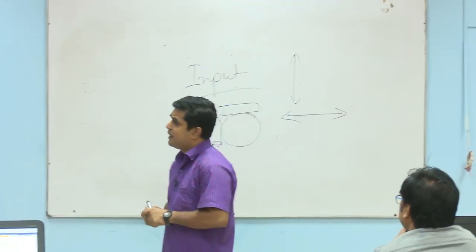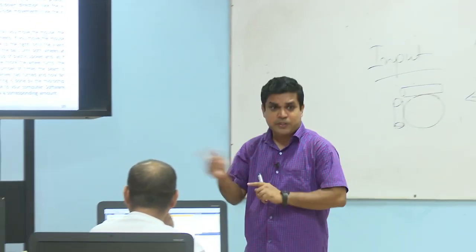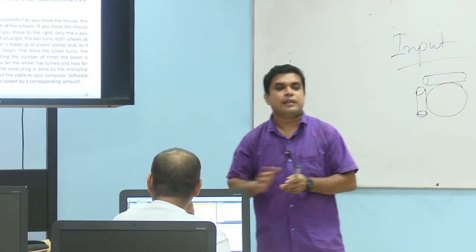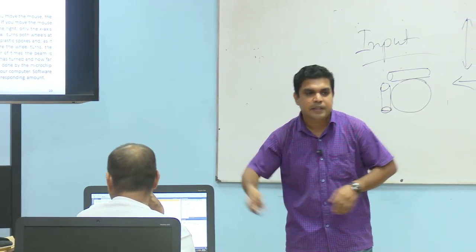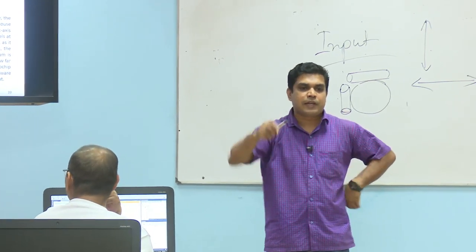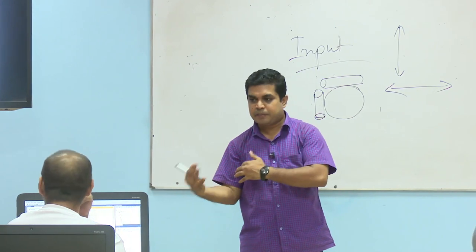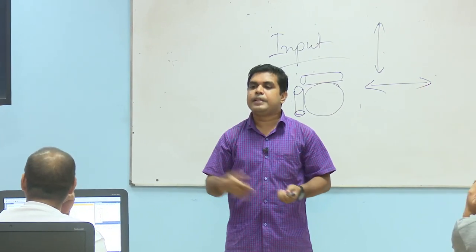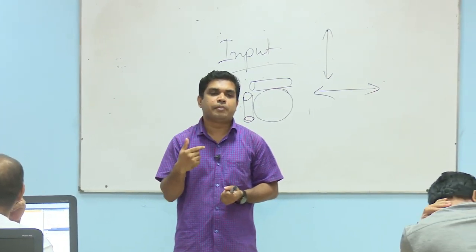Left and right movement — side-to-side — is the X axis. So the mouse movement determines whether the cursor goes left, right, or up and down, and this is represented by the coordinate system.